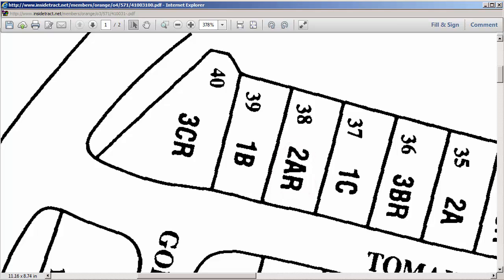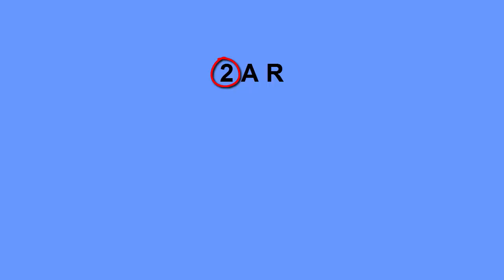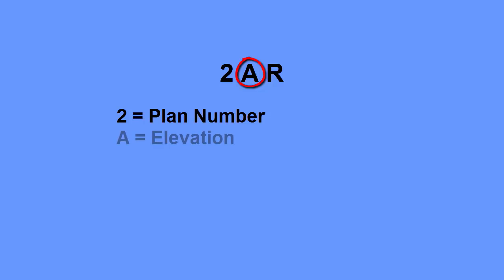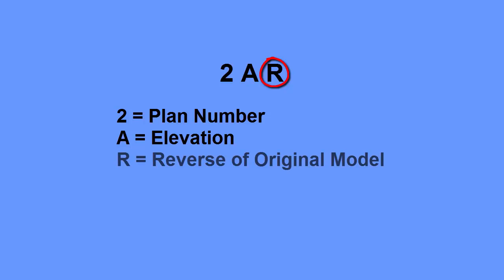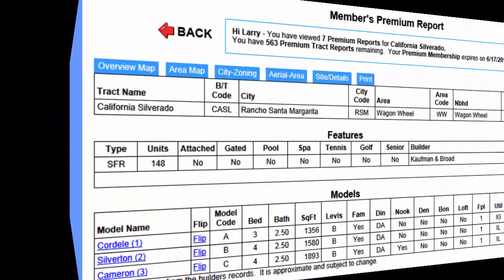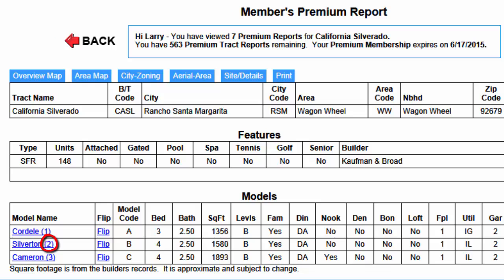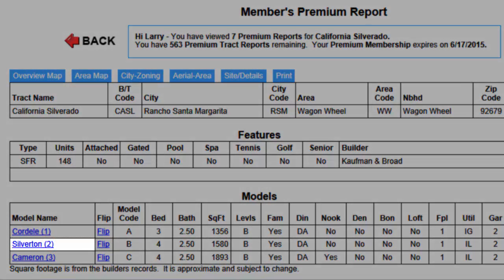Let me take a moment to explain how builders determine which model goes on which lot. In their coding system, the first digit indicates which plan it is — in this case, the subject is a Plan 2. The next character indicates which elevation or style the model is — in this case, the subject is elevation A. The subject also has a third character, an R, indicating that this plan is the reverse of the original model for this tract. All we care about is the first number, the plan number. The subject is a Plan 2.